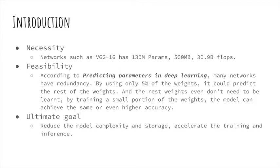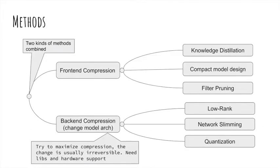The ultimate goal is to compress a network so that we reduce the model complexity and storage. And of course, we want to accelerate the training and inference process. There are two main types of network compression and acceleration: front-end and back-end compression.